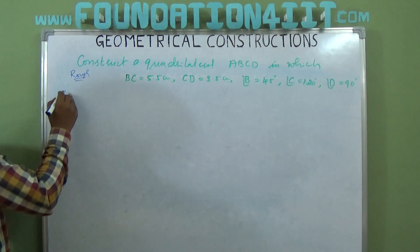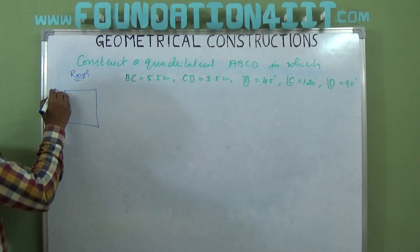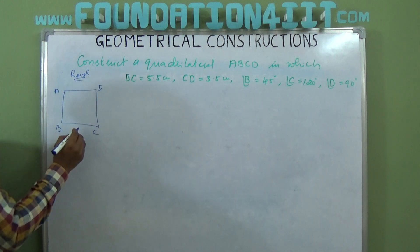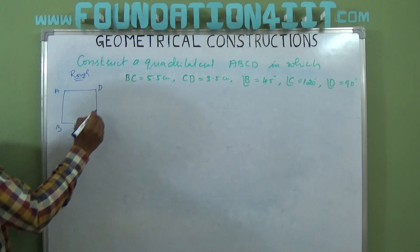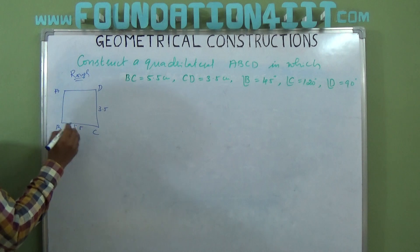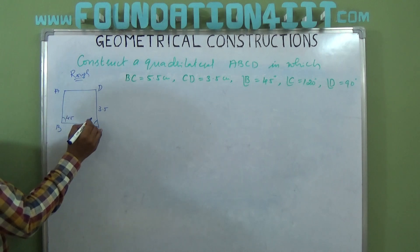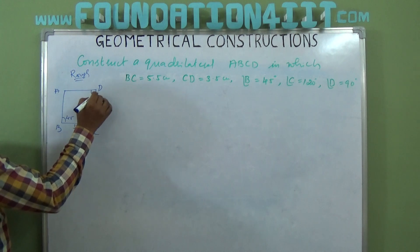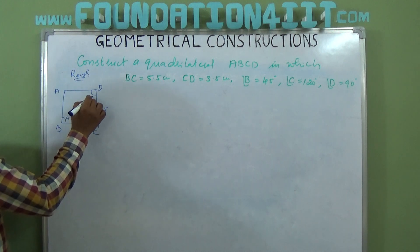If you take quadrilateral ABCD, so BC = 5.5 cm and CD = 3.5 cm. Angle B is given as 45°, angle C is 120°, and angle D is 90°.